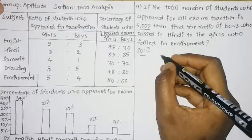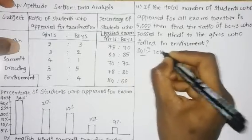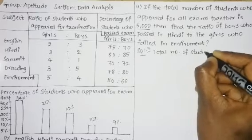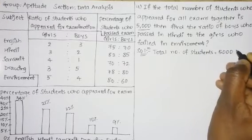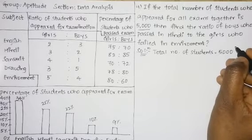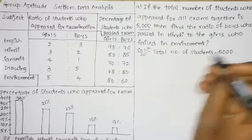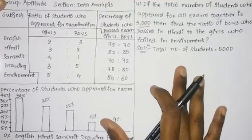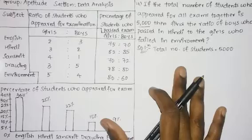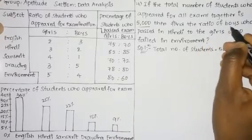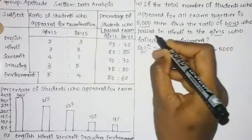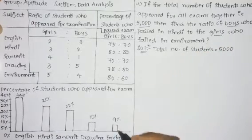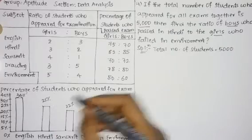The given data: total number of students is equal to 5000. The percentage of students who appeared for each exam is given in terms of a bar graph. For the Hindi subject, we need to find the boys' percentage, and for the environment subject, the girls' percentage.